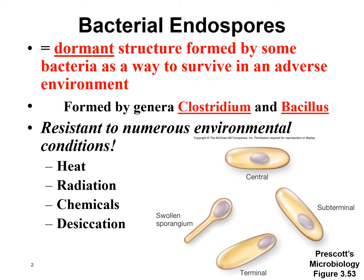Bacterial endospores are dormant structures that are formed by some bacteria as a way to survive when the environmental conditions become bad. The two medically important genera of bacteria that form endospores that you need to remember are Clostridium and Bacillus. An example of Clostridium would be C. diff, or Clostridium difficile, and for Bacillus the example is Bacillus anthracis, which causes anthrax.